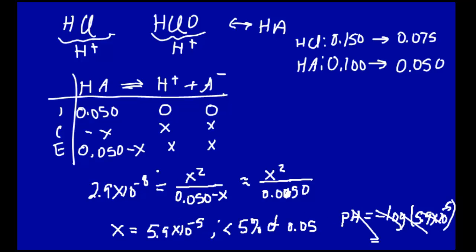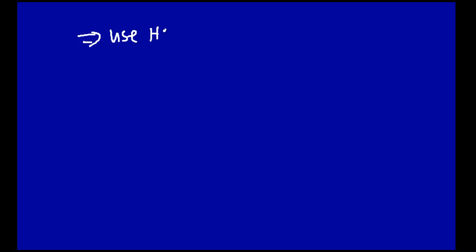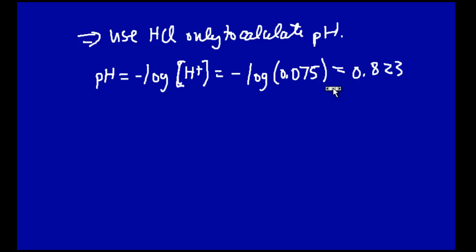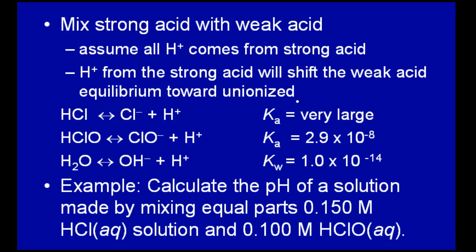X is the concentration of H⁺, that's what we get from dissociating the weak acid — 5.9 times 10 to the minus 5 molar. The amount of protons we get just from the strong acid is 0.075 molar. So the contribution from the weak acid is much smaller than the contribution from the strong acid. Therefore this implies we can use HCl only to calculate the pH. The pH will be minus log of 0.075, which comes out to be 0.823. That's this problem worked out in much more detail.